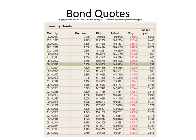The final column is the asked yield to maturity — calculated using the ask price for the bond. We could calculate this number ourselves using a financial calculator if only we knew the date of the quote, so we would know how many coupons each bond has left to pay and how many days to maturity.